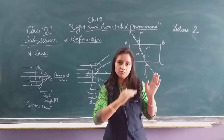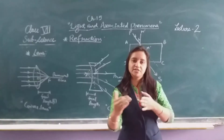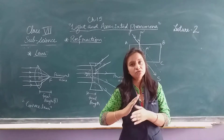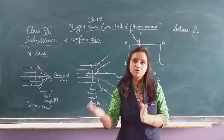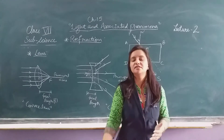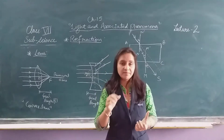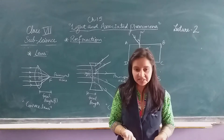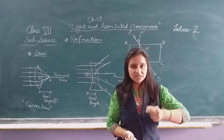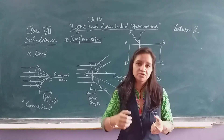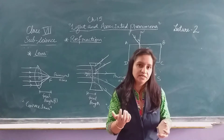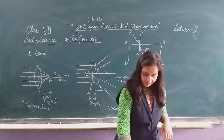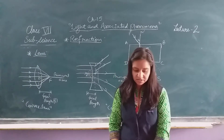When a ray goes from a rare medium to a denser medium, it bends toward the normal direction. When it goes from a denser medium to a rare medium, it bends away from the normal. That is why when we put a stick in water, it appears bent. The reason for this is refraction.